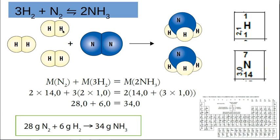If you count the atoms on this side: six hydrogens on the left and six hydrogens on the right. One, two nitrogens on the left and one, two nitrogens on the right. So my atoms on the left balance the atoms on the right. They can say to you: use the law of conservation of mass to prove that this is balanced.